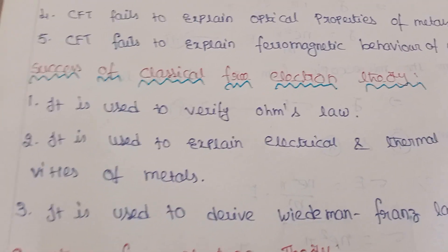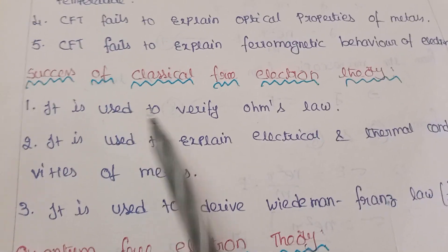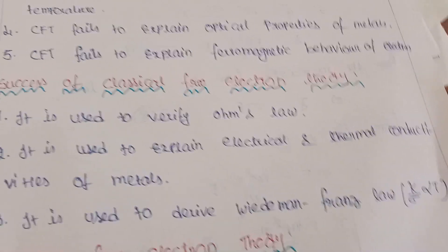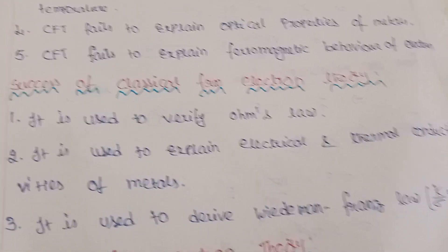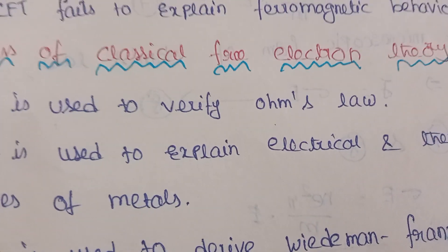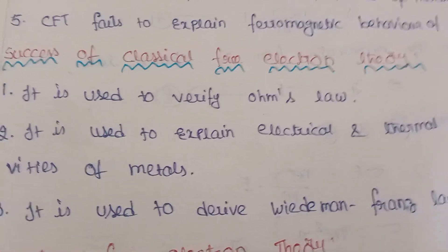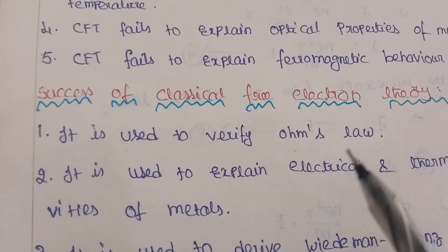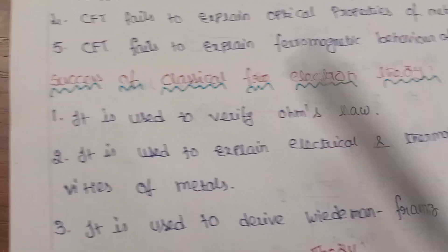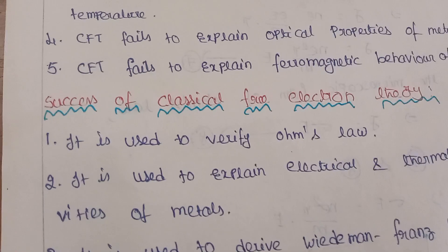The advantages (merits) of classical free electron theory: it verifies Ohm's law, successfully explains the electrical and thermal conductivities of metals, is used to derive the Wiedemann-Franz law, explains the electrical resistivity of a metal, and explains the optical properties of metals.